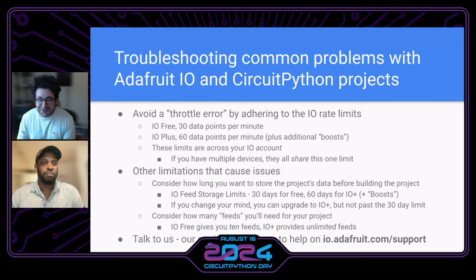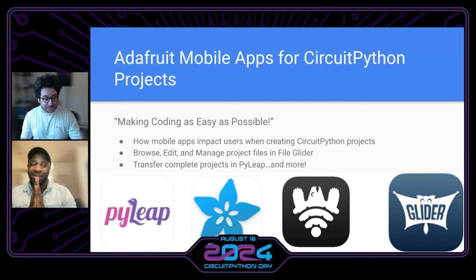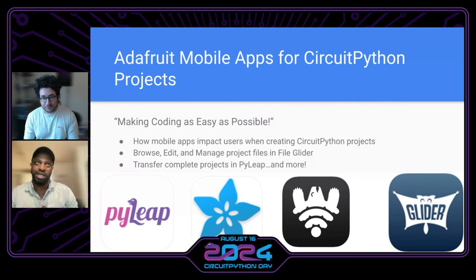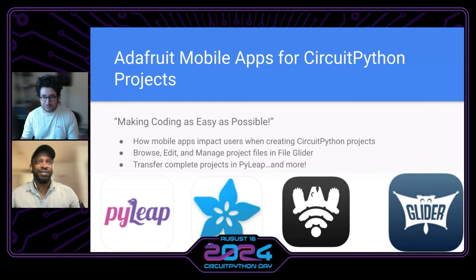And Trevor, you want to talk about our mobile apps? Yes! A lot of folks don't know that we have mobile apps, but we have plenty of them. We have some catered specifically for our CircuitPython projects, and that's what I'm going to talk about today. Our main goal when we develop our apps is to make it as easy as possible to use, which also makes the apps very lightweight — because we want you to be able to pick it up, use it right away, put it back down, pick it back up. Our main goal is to make sure they're super easy to use to make coding as easy and fun as possible.